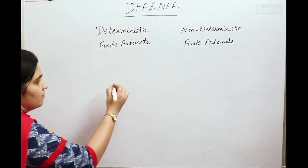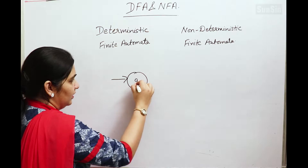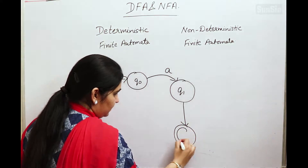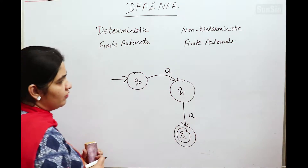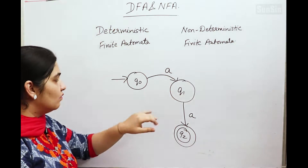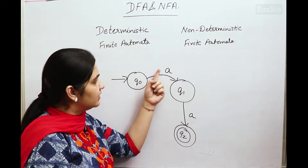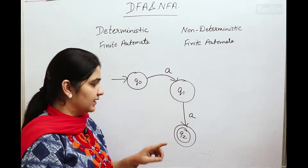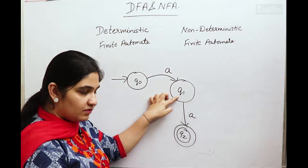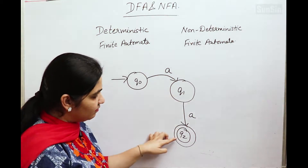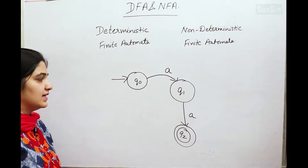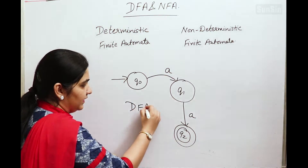Let us look at some examples. If we have a state q-naught and the transitions go to q1 and q2, then q-naught with input alphabet 'a' gives next state q1 — from a particular state with a particular input alphabet we have only one next state. Similarly, q1 with 'a' is q2 — again from a particular state with a particular input alphabet we have only one next state. So we declare this automata as a DFA.